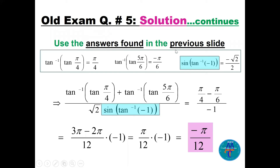Using these values: the numerator is π/4 + (−π/6) = π/4 − π/6. With LCD 12: 3π/12 − 2π/12 = π/12. The denominator involves √2 times (−√2/2) = −1. Dividing π/12 by −1 gives the final answer of −π/12.